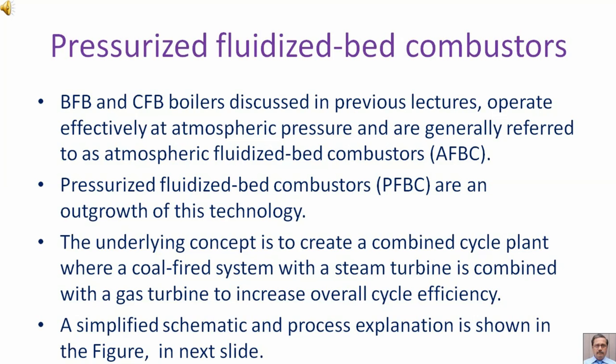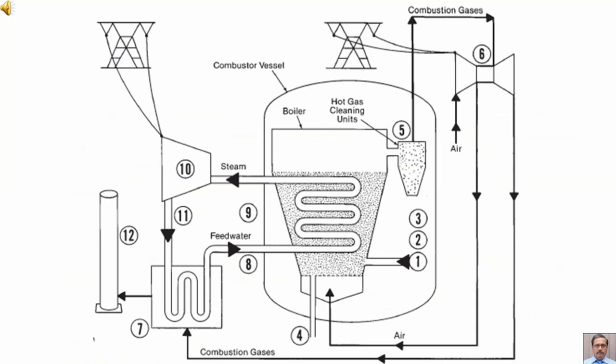A simplified schematic and process explanation is shown in the figure in the next slide. In this schematic diagram, the various tag numbers have been mentioned. Each tag is associated with an equipment or process. In the next few slides, each tag number and its associated equipment and process shall be explained.